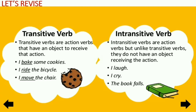Now let's see some examples of intransitive verbs. First one: 'I laugh.' Which is the verb? Laugh. I laugh what? No answer — nothing is there after 'laugh.' So this is intransitive. 'I cry what?' No answer. 'The book falls what?' No answer. So when you don't get an answer to 'what' or 'whom,' the verb is intransitive.